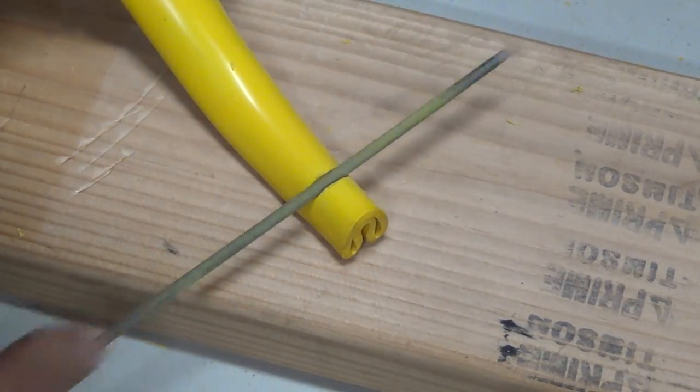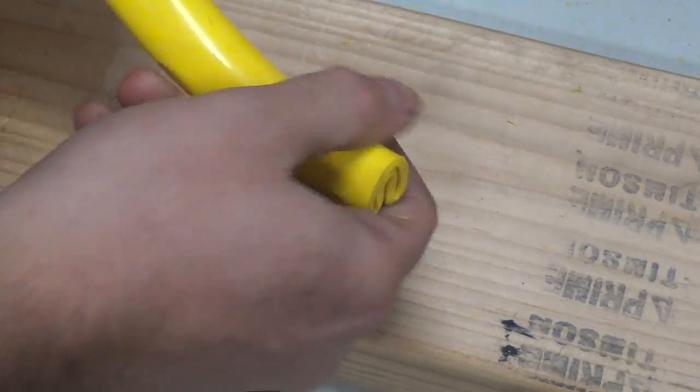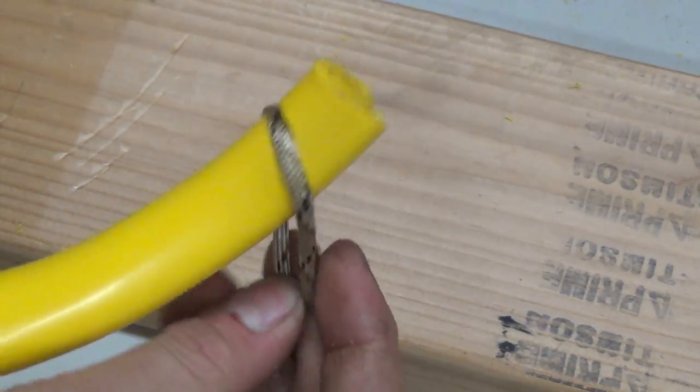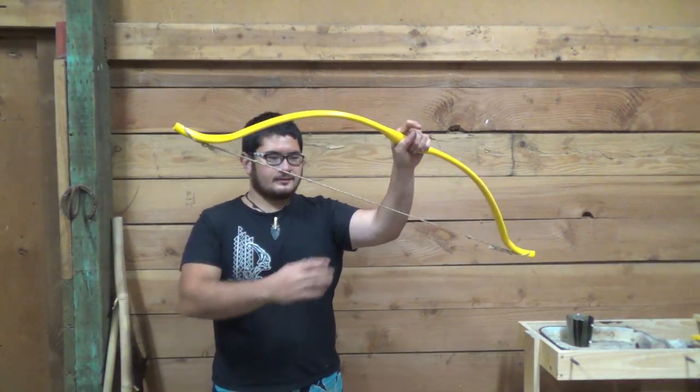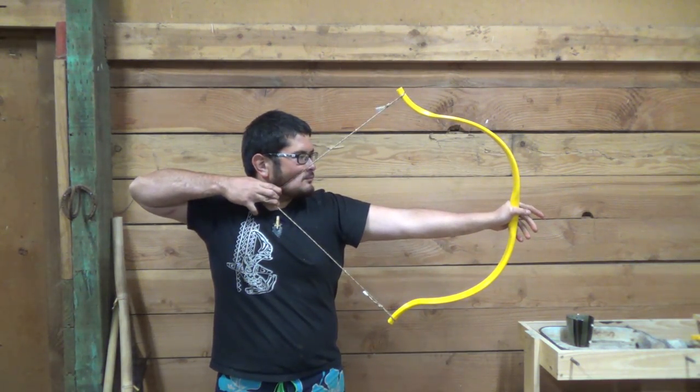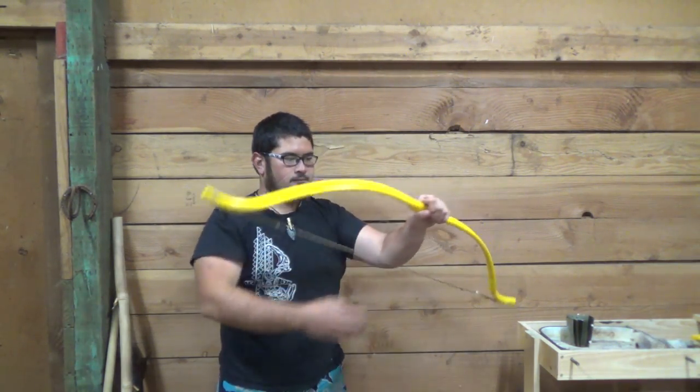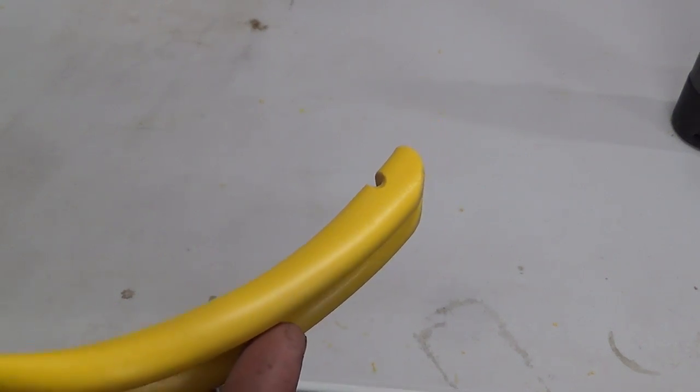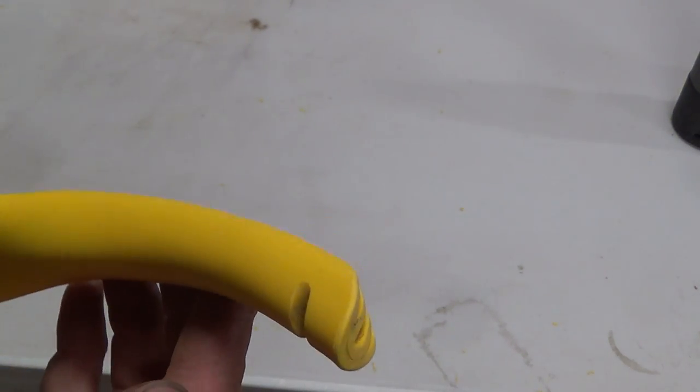Then I use an eighth inch rat tail file to file nocks or string grooves into the tips of the bow. Then I fit the bow with a temporary paracord string so I can test the brace height and how the bow draws. Now that I'm happy with it, I finish up the tip and now it's time to apply a vinyl backing.